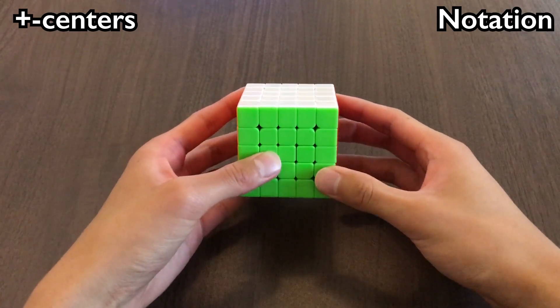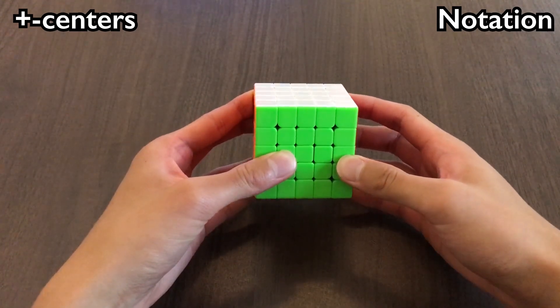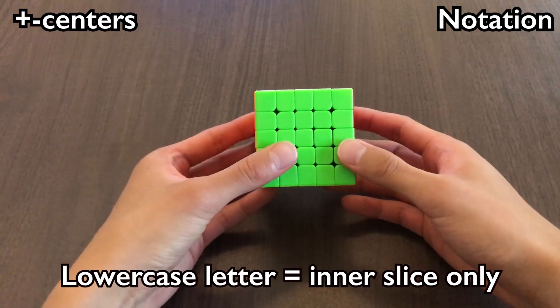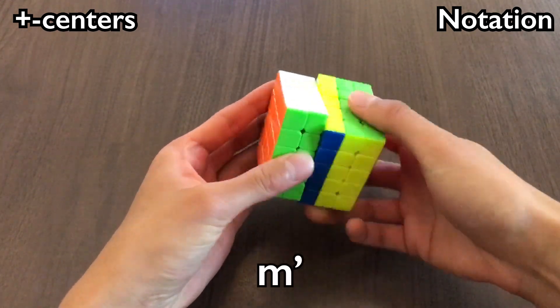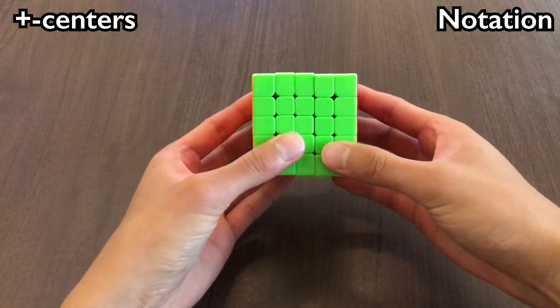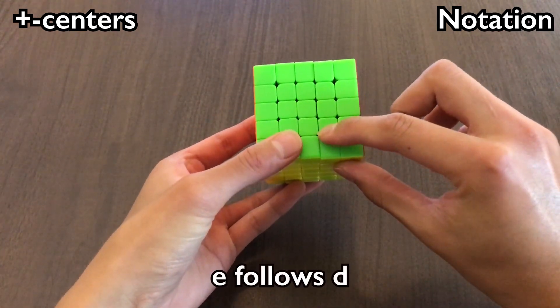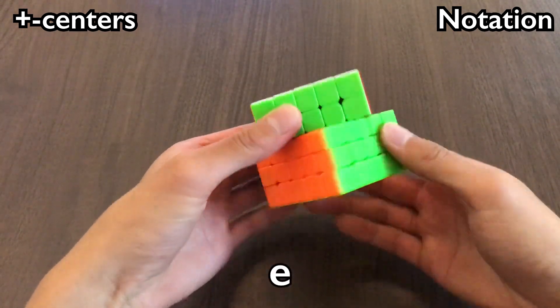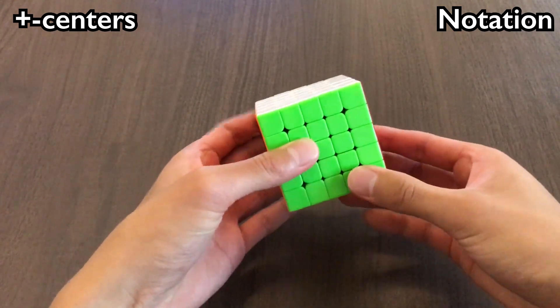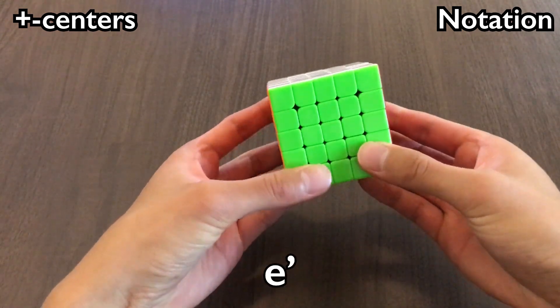Before I move on to plus centers, I need to talk about notation. A lowercase letter means to only move the inner slice. So M is this and M' is that. The other thing is that E follows D. D goes this way and E also goes that way. D' goes this way and E' goes that way.